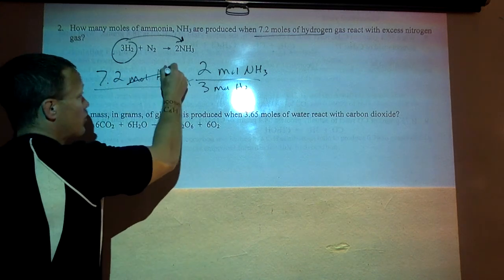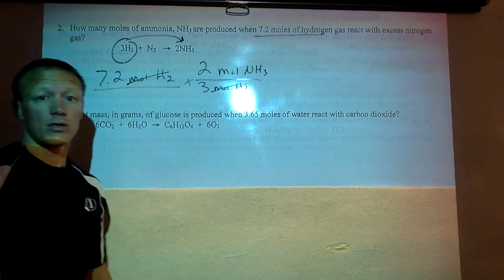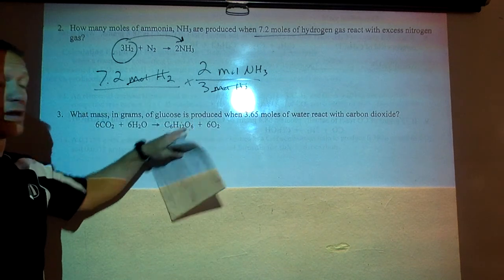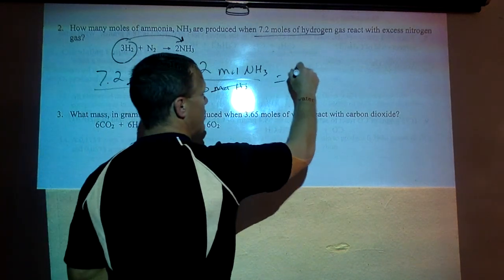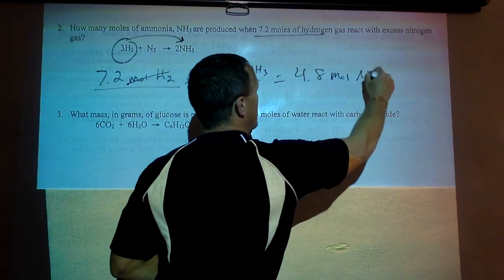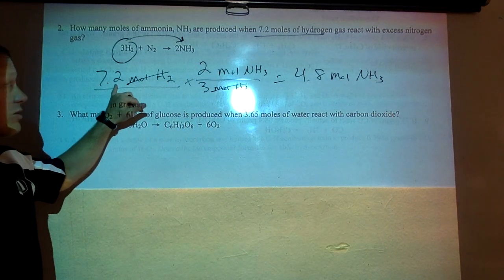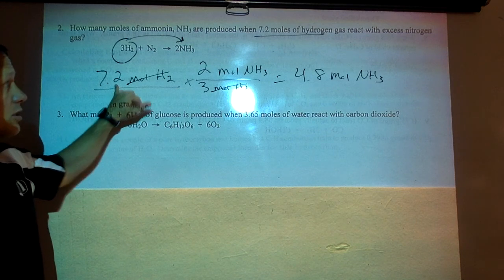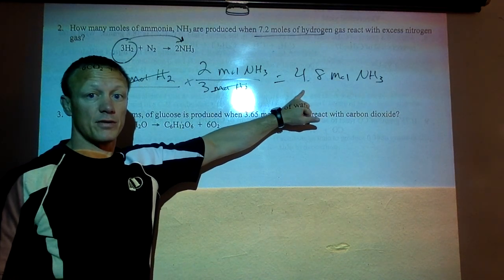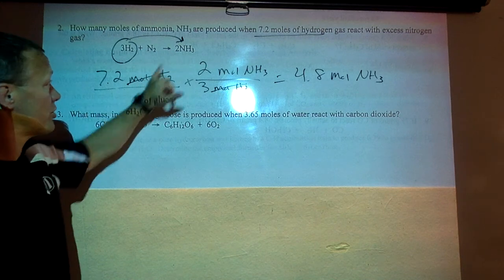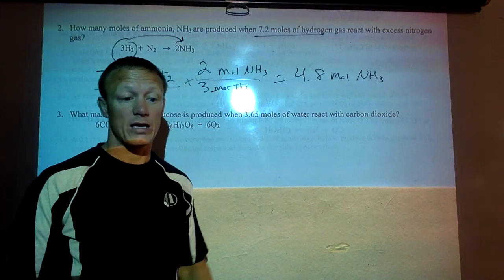So these moles cancel. Make sure your labels cancel. If you're multiplying across the top divided by the bottom you get 4.8 moles. So if you would use 7.2 moles in this reaction you'd produce 4.8 moles of NH3. It's the same ratio as three to two which is 7.2 to 4.8 in this case.